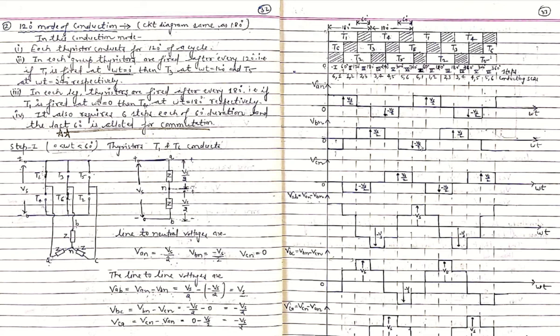Good morning students. We will continue our three-phase inverter topology with 120-degree mode of conduction. In the previous lecture, we saw that in 180-degree mode of conduction, the thyristors are conducting for 180-degree duration in a cycle of 360 degrees. As the name tells, in 120-degree mode each thyristor conducts for 120 degrees. There are two groups: the positive group consisting of T1, T3, T5 and the negative group consisting of T2, T4, T6. Thyristors in each group are fired after every 120 degrees.